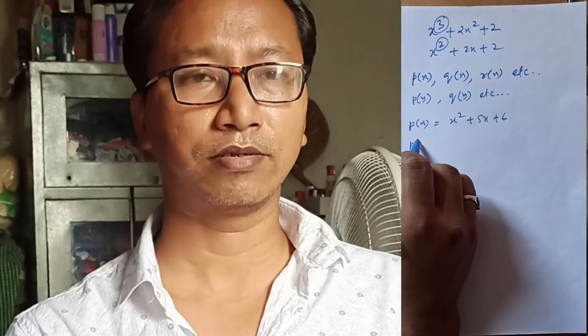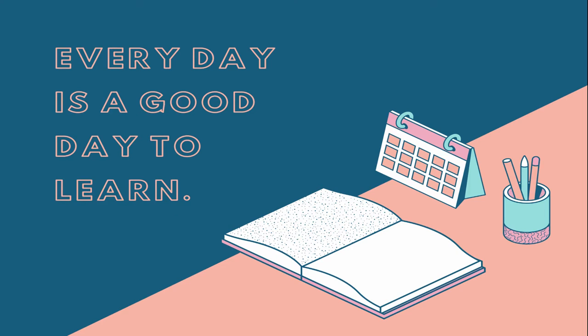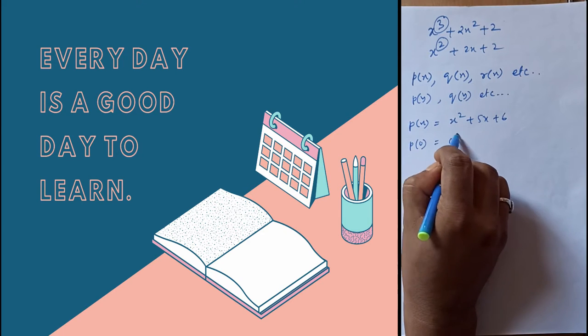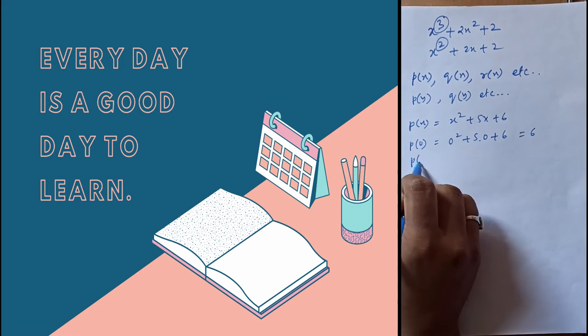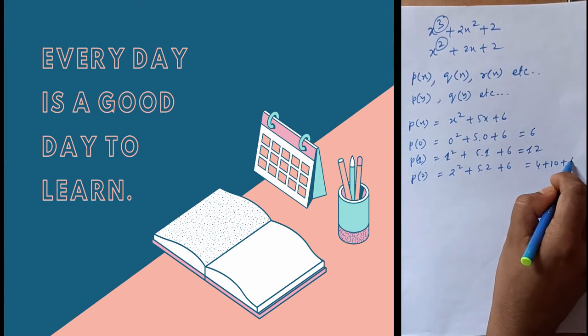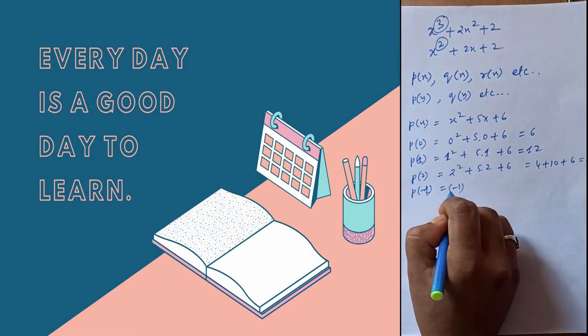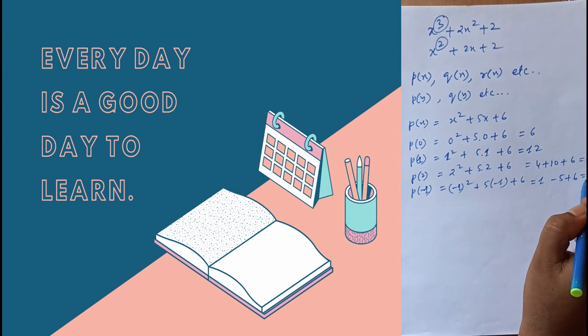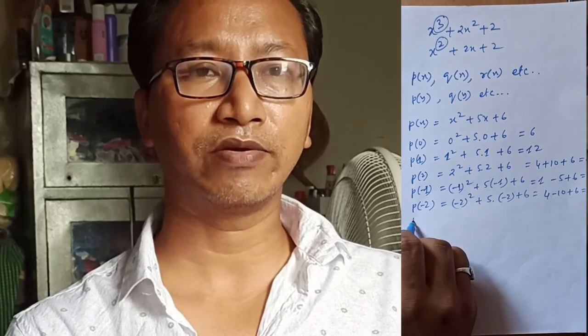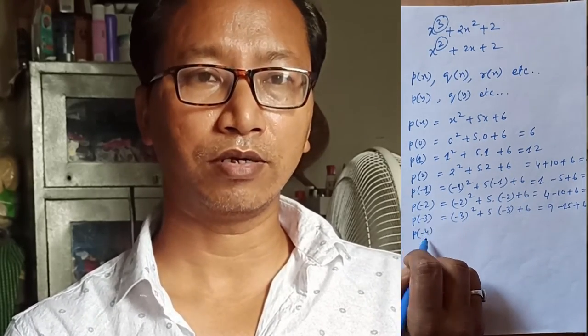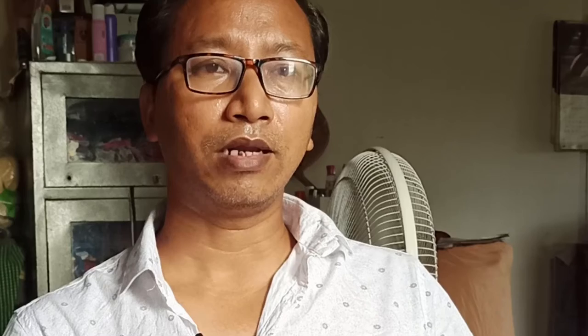We can find different values of the polynomial p(x) by assigning different values of x. The values that we get for p(x) when we have different values of x will be called the value of the polynomial.